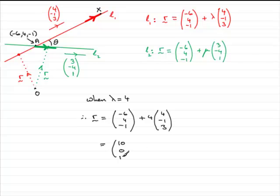So that's the position vector of X, but they wanted the coordinates of X, so therefore the coordinates of X are just going to be the values in the vector, but we need to write them as 10, 0, 11.